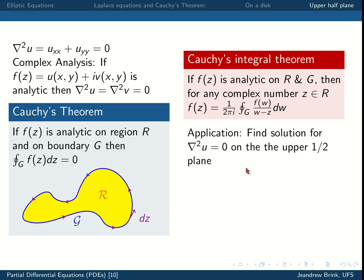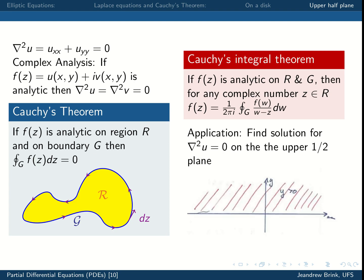Now we're going to change the boundary conditions — we're going to find a solution for Laplace's equation, ∇²u = 0, on the upper half plane. This illustrates how the boundary condition actually affects the solution itself. We're given the boundary condition u on the real line.